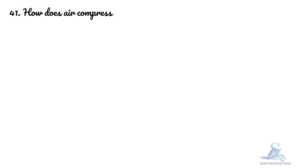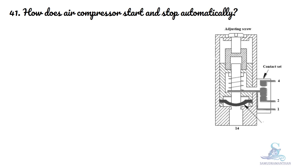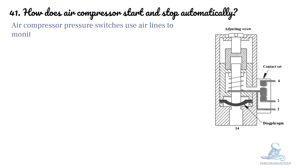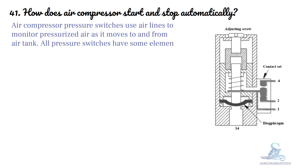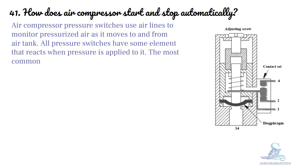How does an air compressor start and stop automatically? Air compressor pressure switches use air lines to monitor pressurized air as it moves to and from the air tank. All pressure switches have some element that reacts when pressure is applied to it.